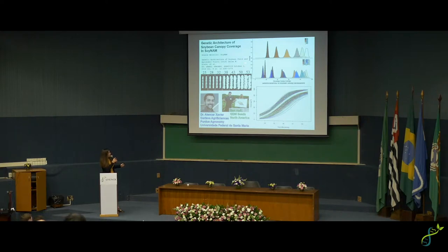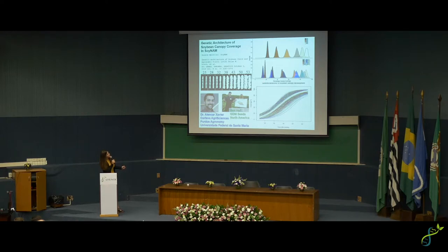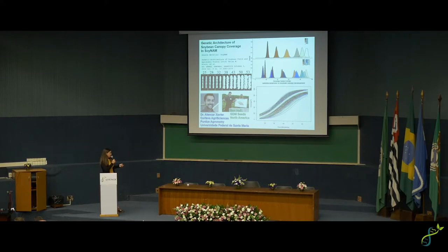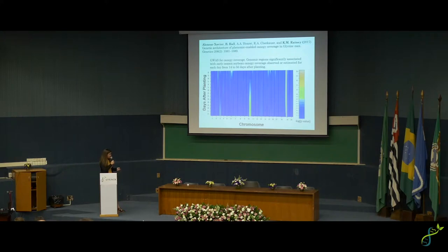You can turn that canopy information over time into distributions of canopy coverage from the experiment — multiple histograms showing canopy development throughout the season. We took observations from the ground and drones and fit them to logistic growth models, generating growth curves for 5,000 RILs. This allows you to have some observed and some predicted values from the growth model.